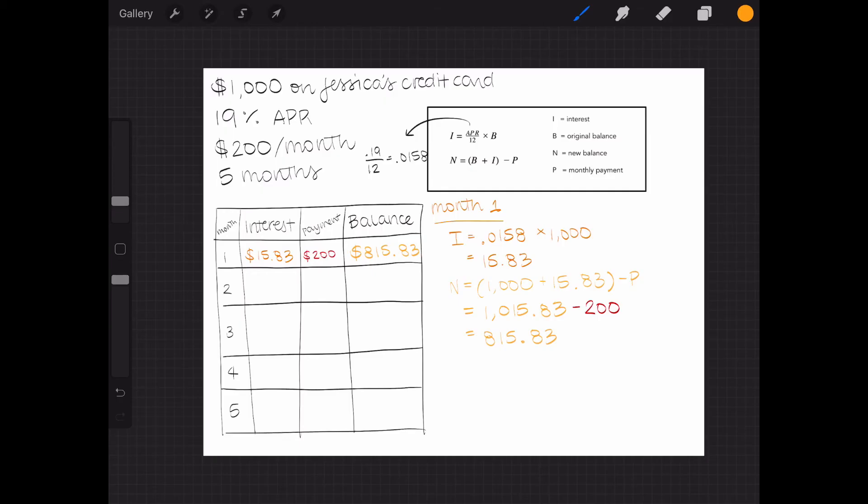Now we can repeat this process for months two through five, but remember to use this new balance for next month's calculations. Go ahead and solve for Jessica's interest and balance for month two. If we repeat this process for the remaining months, we'll find that the amortization table will look like this.